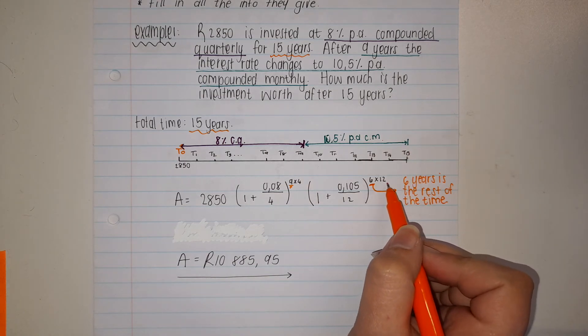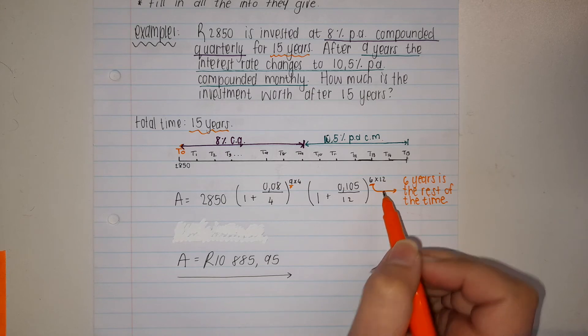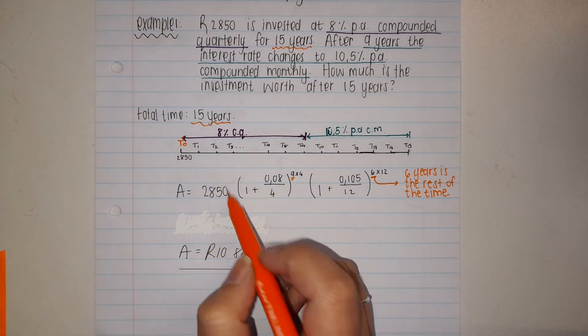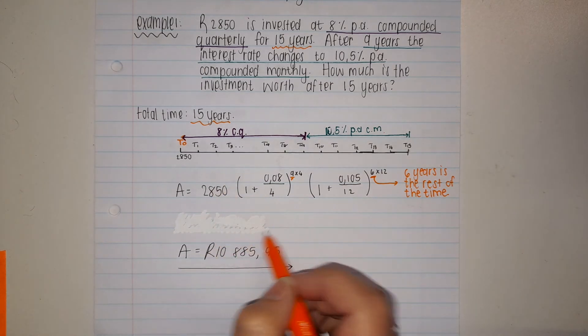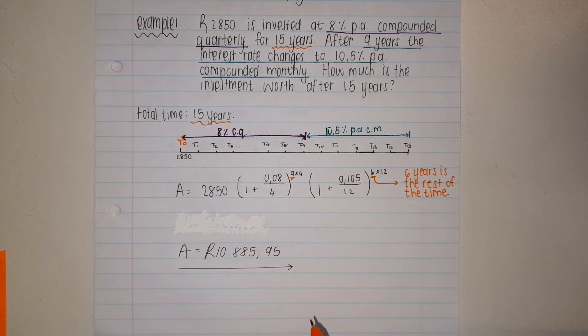So it's 6 times 12, compounded monthly. Now you type this whole thing in your calculator. Please don't try to do it separately. The whole thing in your calculator, and you should get 10,885.95 rand.